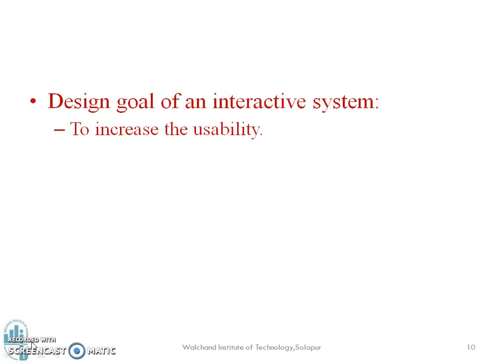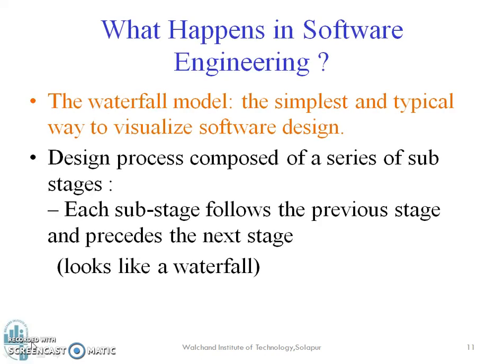So the design goal of an interactive system is primarily to increase usability. What happens in a typical software engineering scenario? We have all studied software engineering. The waterfall model is the simplest and most typical way to visualize a software design. The design process is composed of a series of sub-stages, where each sub-stage follows the previous stage and precedes the next stage.